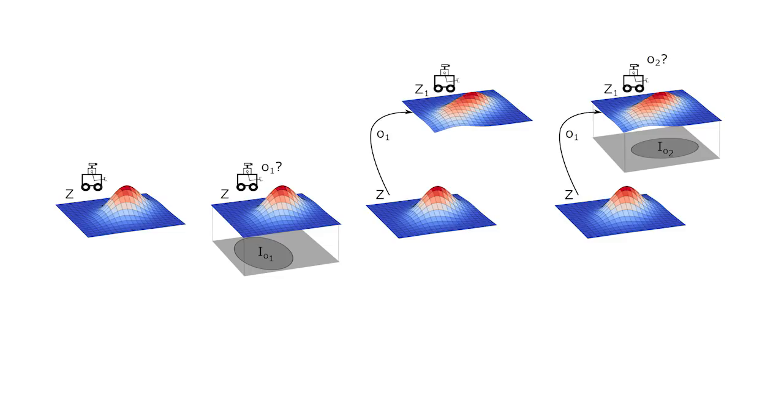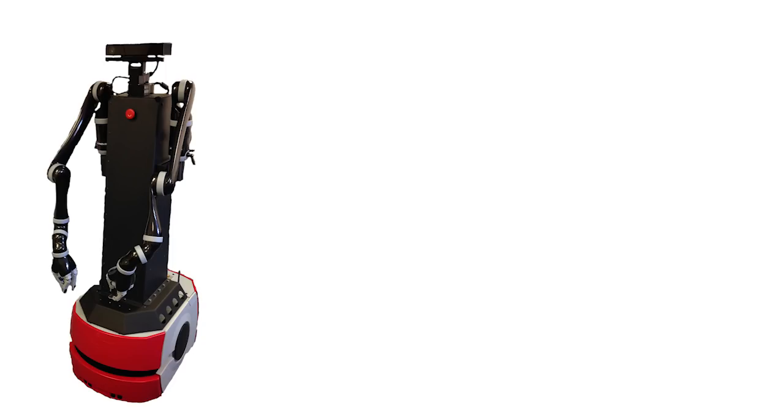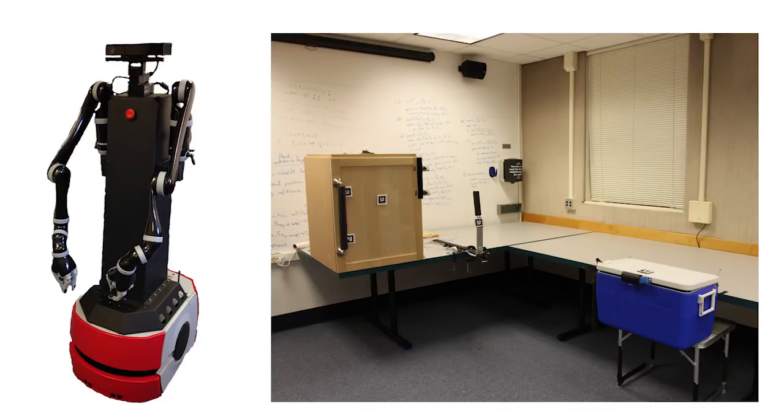To test our framework, we tasked our robot, Anathema, with solving a mobile manipulation problem. Anna was placed in a room with a cupboard, a cooler, and a switch that turned a light inside the cupboard, on or off.